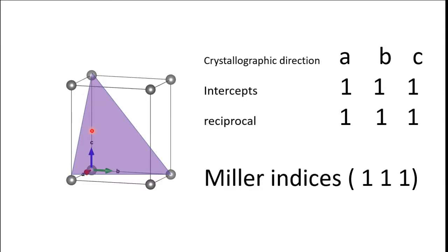Third wala hai: yahan par intercept along A axis agar dekho toh in terms of A, aapke paas intercept hoga at 1A. B ke along yeh plane 1B par intercept kar raha hai, toh in terms of B intercept ki value hogi 1. C axis along bhi at 1C intersect kar raha hai, toh yahan par value hogi 1. Reciprocal values: 1, 1, 1. Miller Index aapke paas hogi 1, 1, 1.